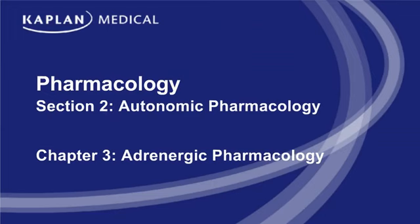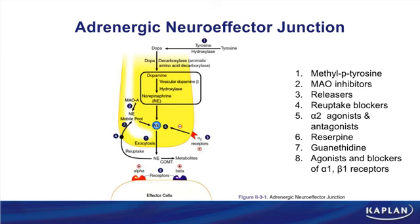Chapter 3: we will review adrenergic pharmacology. In this figure, we look at the synthesis and release of norepinephrine. We will talk about the fates of norepinephrine once it's released from the neuron, and then we're going to look at a lot of different drugs that can interact and affect this pathway.